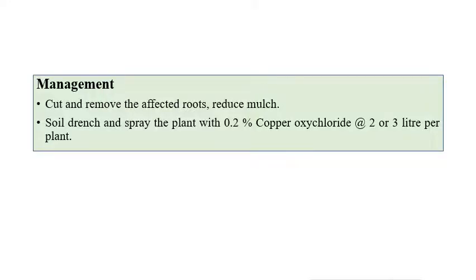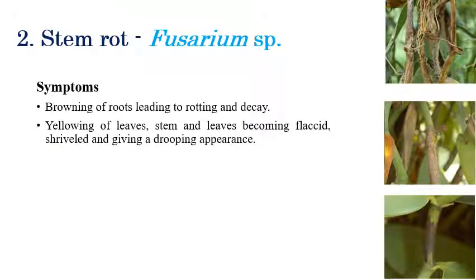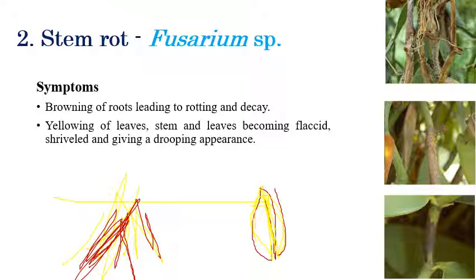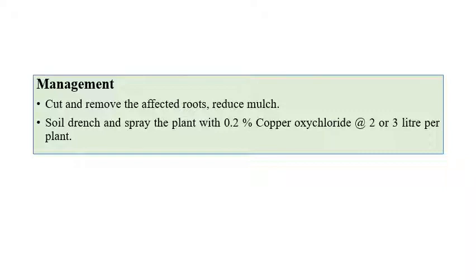Stem rot is caused by Fusarium species. Browning and decaying of roots can be seen. On leaves, yellowing of leaves, flaccidity, and drooping can also be observed. For management, removing of infected plants and reducing mulching, along with spraying of 0.2% copper oxychloride at two to three liters per hectare is recommended.